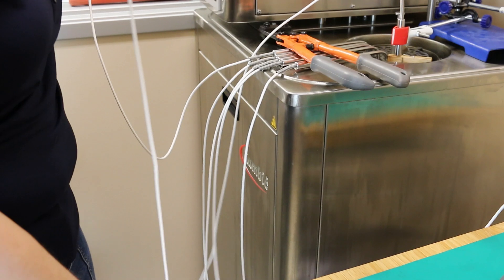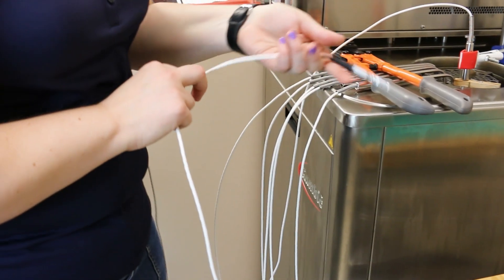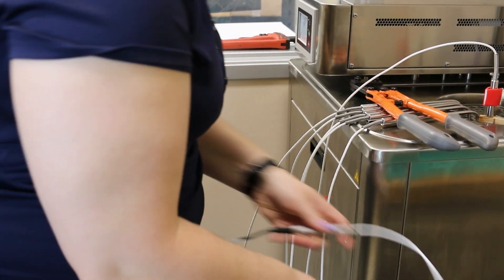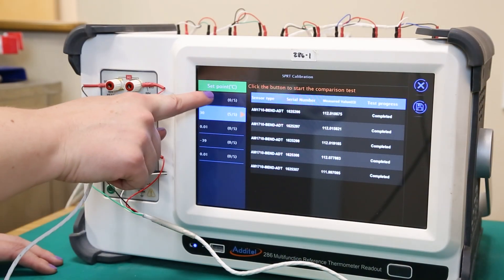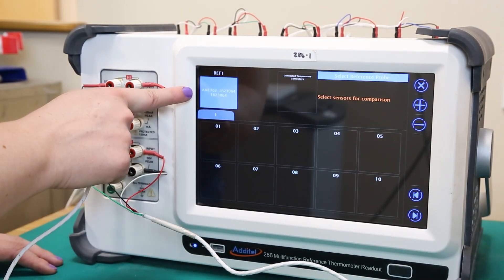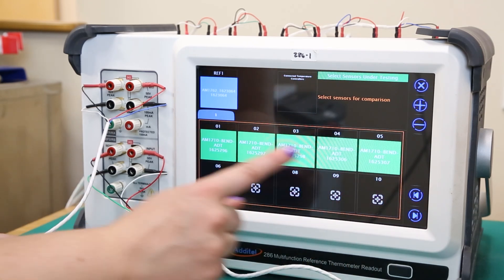Since these probes use quick connectors, we are able to easily disconnect and reconnect them without having to remove the four wire connections from the 286. On the 286 screen, select the first probe on the 160 degree calibration point, and follow the same steps as the previous calibration to run the automated measurement.